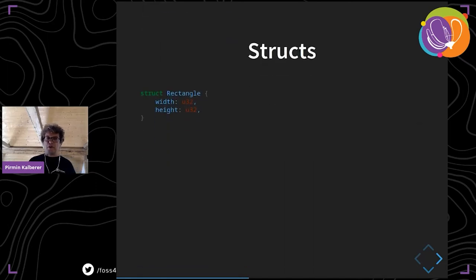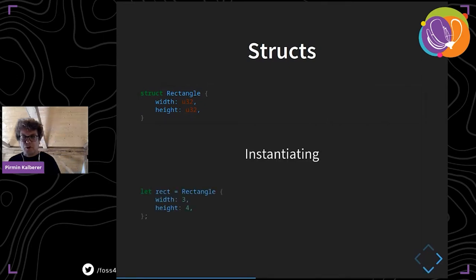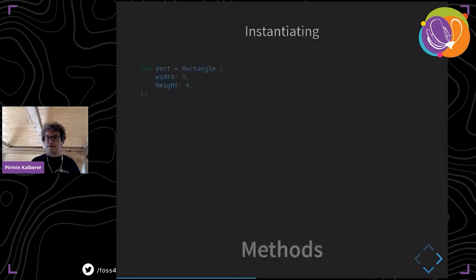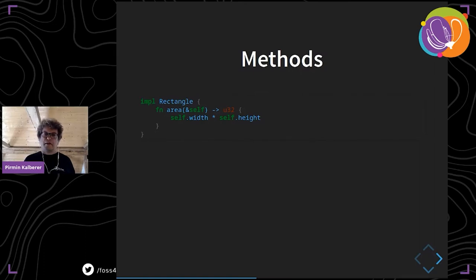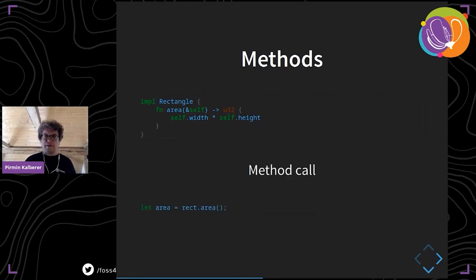If you have a more complex type, you can use a struct. Here is a rectangle struct with two fields of type u32. To create an instance, you write the struct name with curly braces and assign the values. You can also add methods using an 'impl' block — for example, an 'area' method that takes a reference to self and returns a u32. To call this method, you need an instance of the struct.